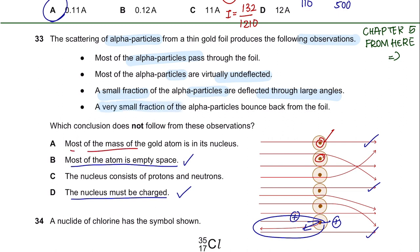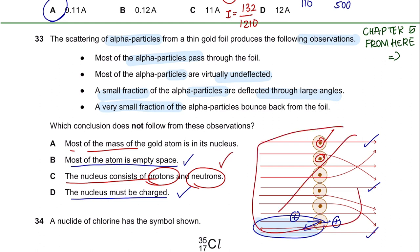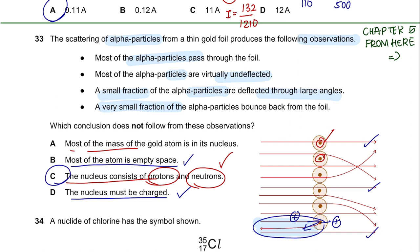A very small fraction of alpha particles bounce back from the nucleus. In option C, it says the nucleus consists of protons and neutrons—which is correct—but this is not proven through this experiment. So the answer here is C.